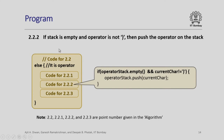Next, what happens if the stack is empty and operator is not a closing parenthesis — this is point 2.2.2 in our algorithm. In such a case we need to push the operator on the stack. The code: if operator_stack is empty and current_char is not equal to closing parenthesis, then operator_stack.push(current_char). Simple implementation.